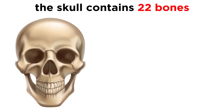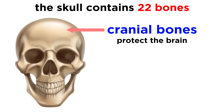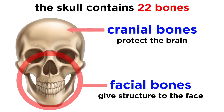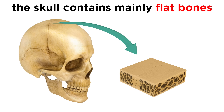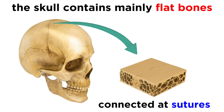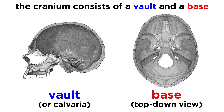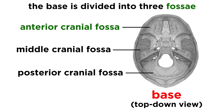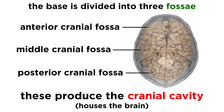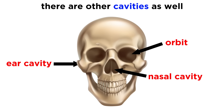The skull is a fascinating structure, made of 22 different bones. Cranial bones are the ones that protect the brain, and facial bones are the ones that give structure to the face. Most of the bones in the skull are flat bones, and in the cranium these are connected at serrated lines called sutures. The cranium is made of a vault as well as a base, and the base is divided into the anterior, middle, and posterior cranial fossae. Together, these produce the cranial cavity where the brain sits. There are also ear cavities and nasal cavities, as well as orbits, which house the eyes.